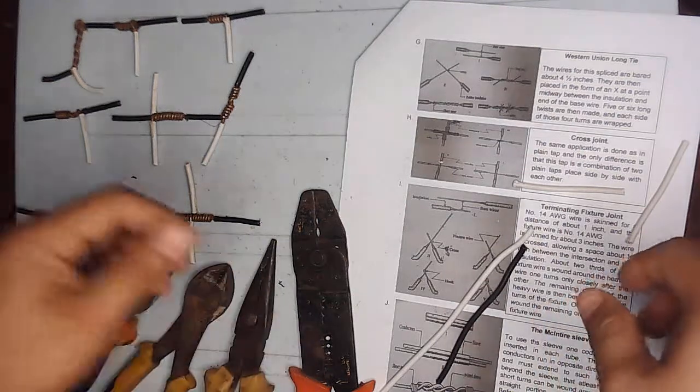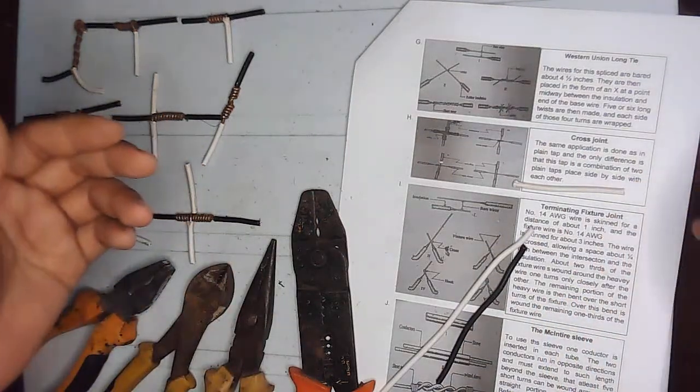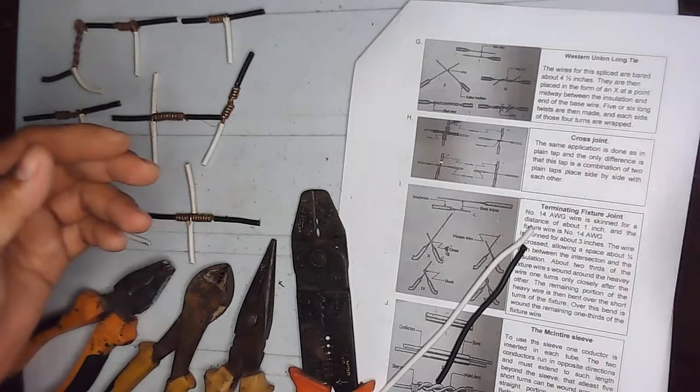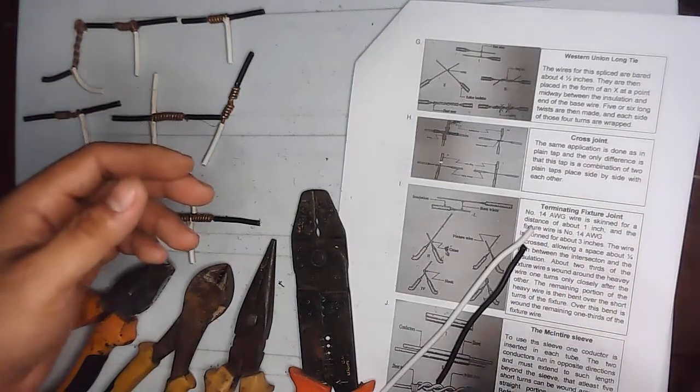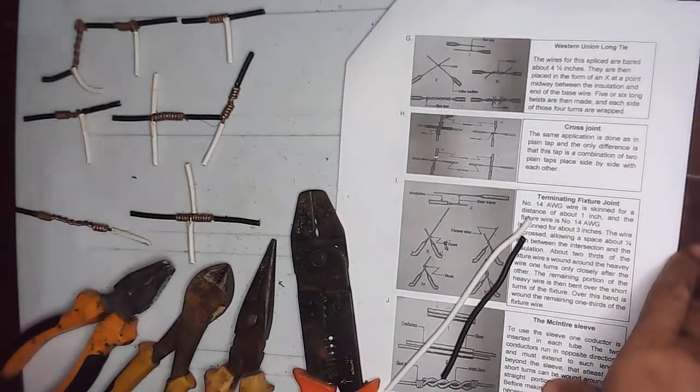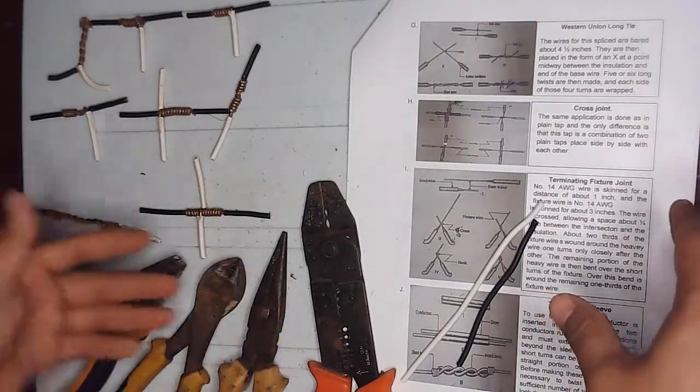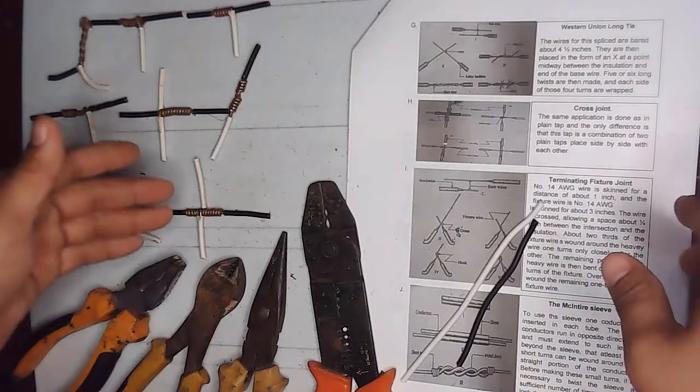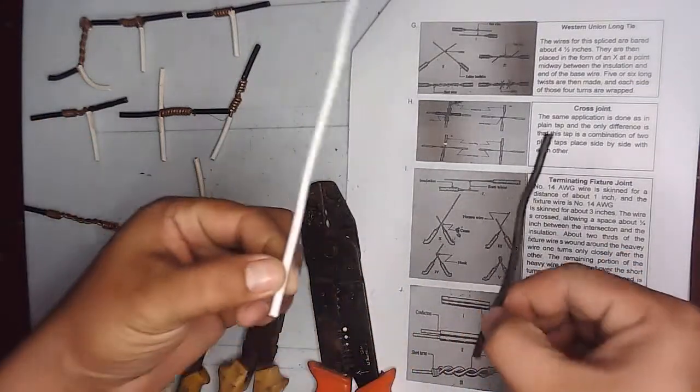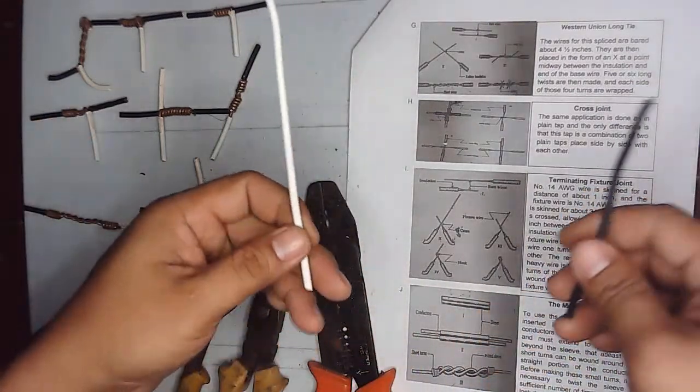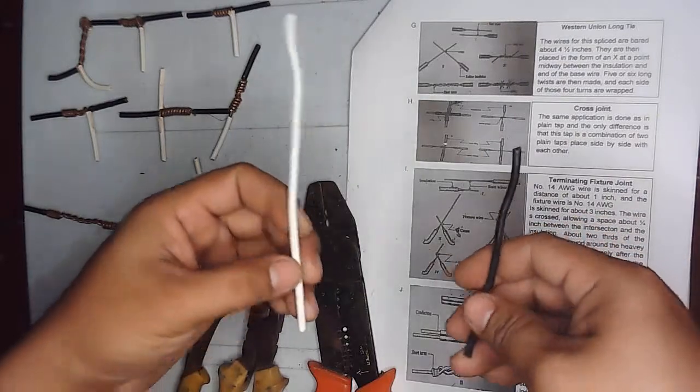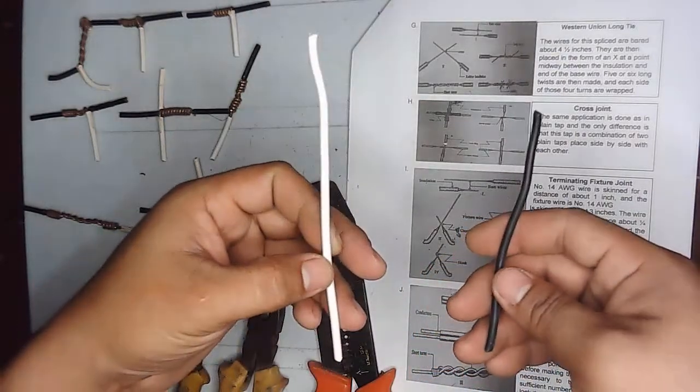Next, the wire splice we will make is a terminating fixture joint. We can use these four tools, and two wires will be joined together. As you can see, one of the wire is short, the other one is long.